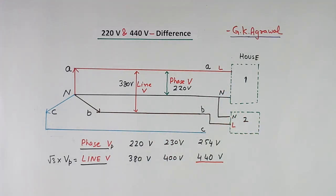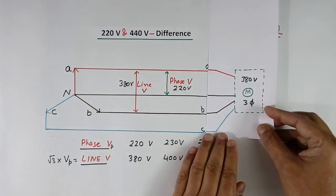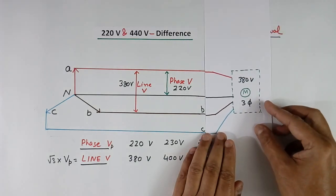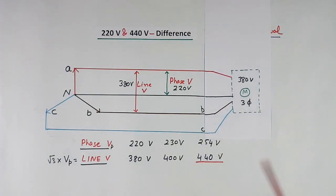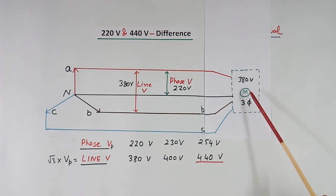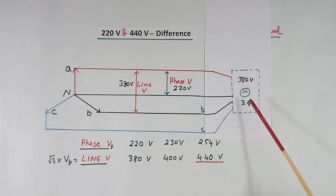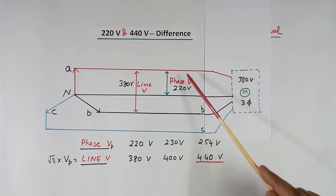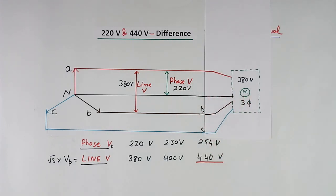But suppose in some houses you have a motor which is 3-phase — for example, pumping water requires 3-phase. So they get all 3 phases and neutral also.